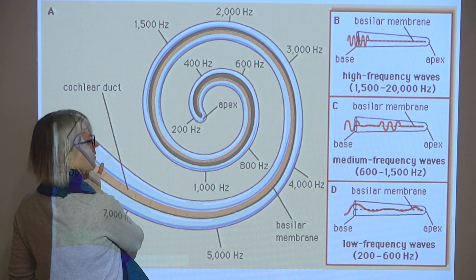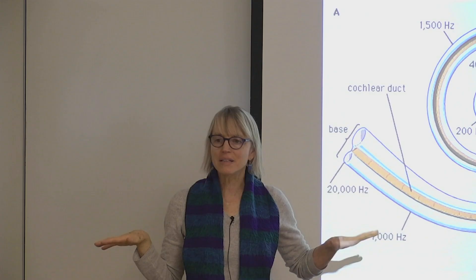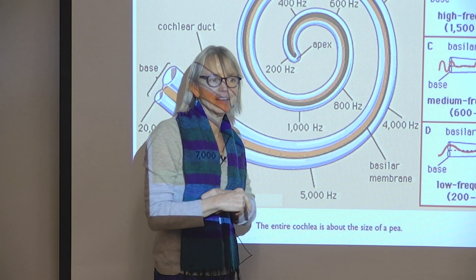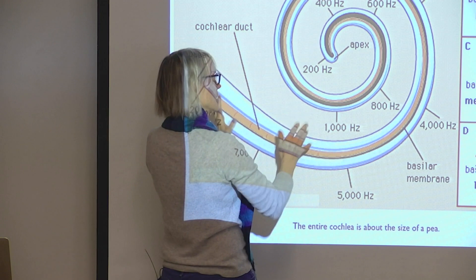Once different parts of the cochlea oscillate at different frequencies to different degrees, nerve cells there pick up those oscillations and signals travel up the auditory nerve into the brain. So the path between the cochlea and the first step up in the cortex is much more complicated in hearing than in vision — in vision there's just one synapse between retina and primary visual cortex via the LGN, whereas in audition there are many nuclei and relays deep in the brain.